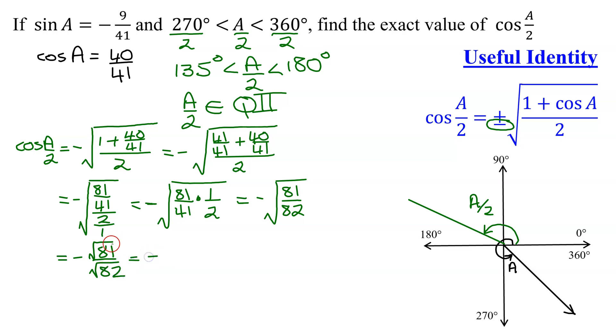That simplifies to negative the square root of 81, divided by the square root of 82, which is negative 9, and the square root of 82 does not simplify, because it's 41 times 2, both of these are prime.